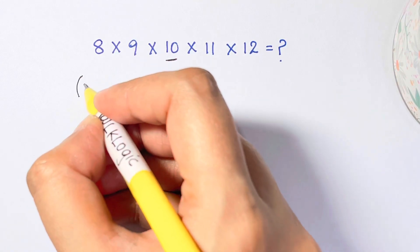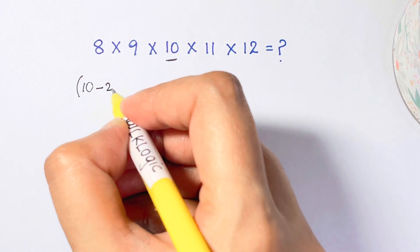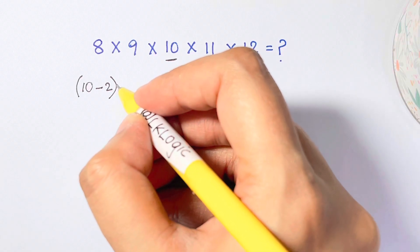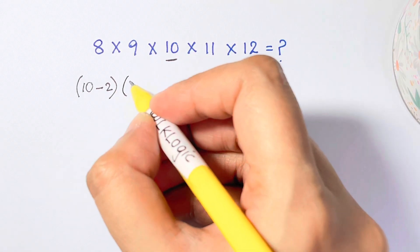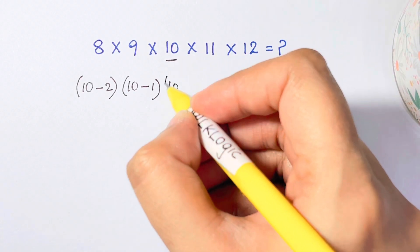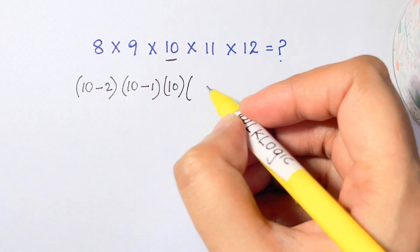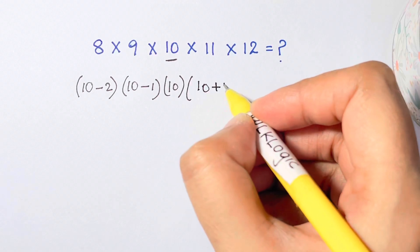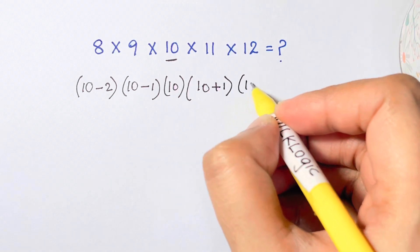Let's see what is 8 in terms of 10. That is 10 - 2 times, you have 9 as 10 - 1, and this is 10 so I'm going to keep it, then 11 can be 10 + 1 and 12 is 10 + 2.